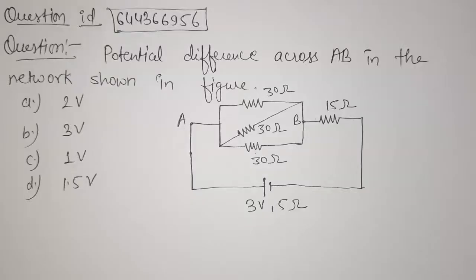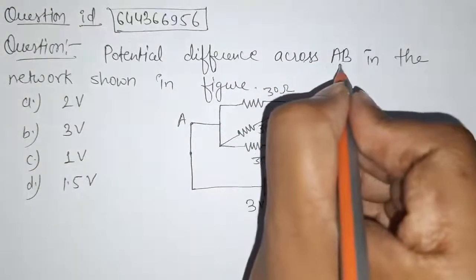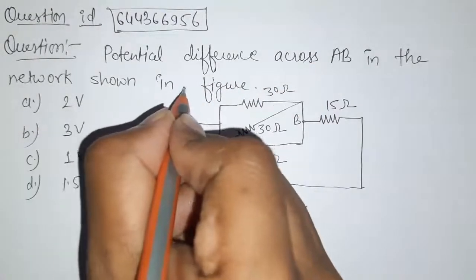Hello students, here is our question: find the potential difference across AB in the network shown in the figure.